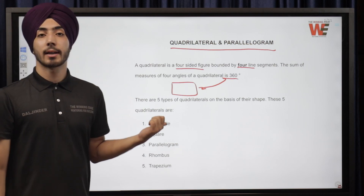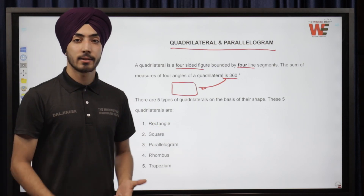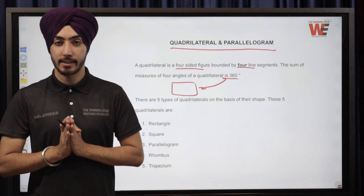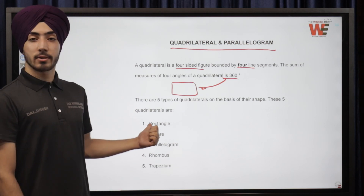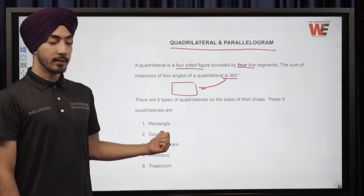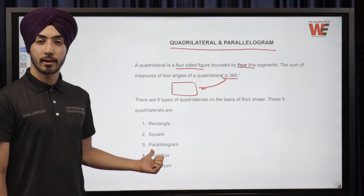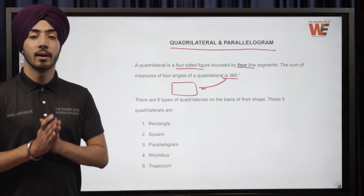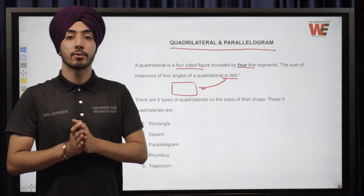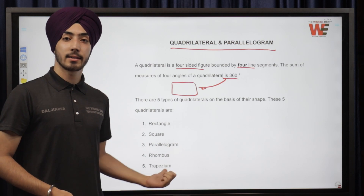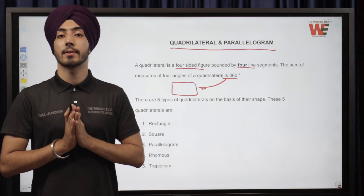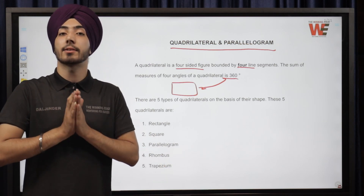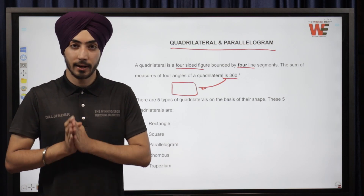Now we are going to see what types of quadrilaterals we need to study from the perspective of RIMC examinations. We are going to study rectangle, square, parallelogram, rhombus, and trapezium. Remember, in today's video we will look at these five types of quadrilaterals from the perspective of lines and angles, not area and perimeter.